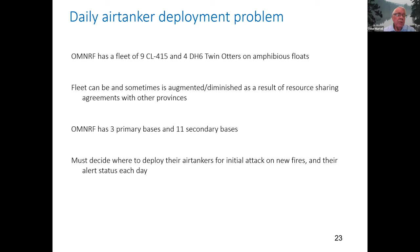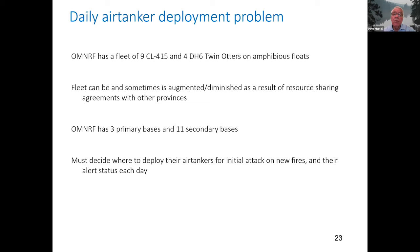Returning to the daily air tanker deployment problem: the Ministry of Natural Resources in Ontario has a fleet of nine CL415s and four Twin Otters on amphib floats. That fleet can sometimes be augmented or diminished through resource sharing agreements with other provinces. The Ministry currently has three primary bases and 11 secondary bases. Each day they have to decide where to deploy their air tankers for initial attack on new fires, and the alert status of those aircraft — basically how much time the pilots have from when they're told to go until wheels up.